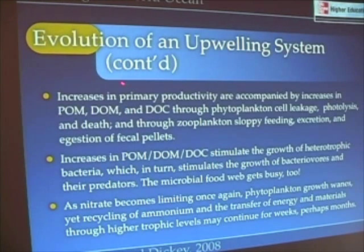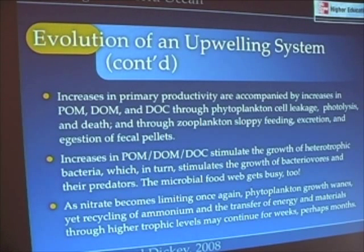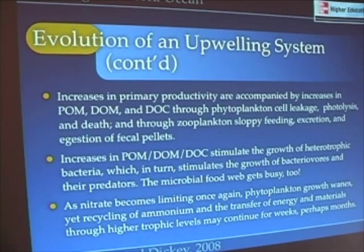As we have increases in primary productivity, we're going to get increases in particulate organic matter, dissolved organic matter, and dissolved organic carbon — as phytoplankton leak during their regular metabolic processes, as photolysis kills phytoplankton and they leak out their contents, and as zooplankton feed upon them and excrete fecal pellets. As primary production increases and phytoplankton and diatoms are fueled by nitrate, the microbial food web is also going to start spinning up.